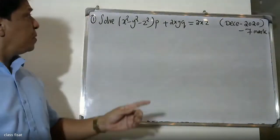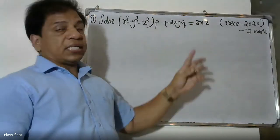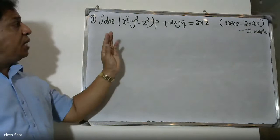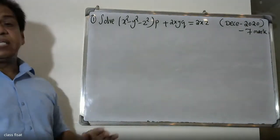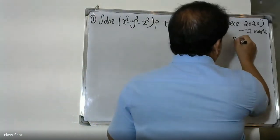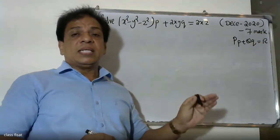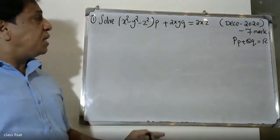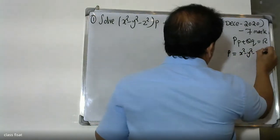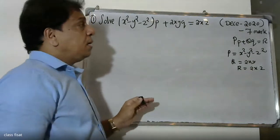Good morning students. The question is to solve the Lagrange's linear equation: (x² - y² - z²) p + 2xy q = 2xz. This is a first order Lagrange's linear equation. Applying the formula: P p + Q q = R, we identify P = x² - y² - z², Q = 2xy, and R = 2xz.